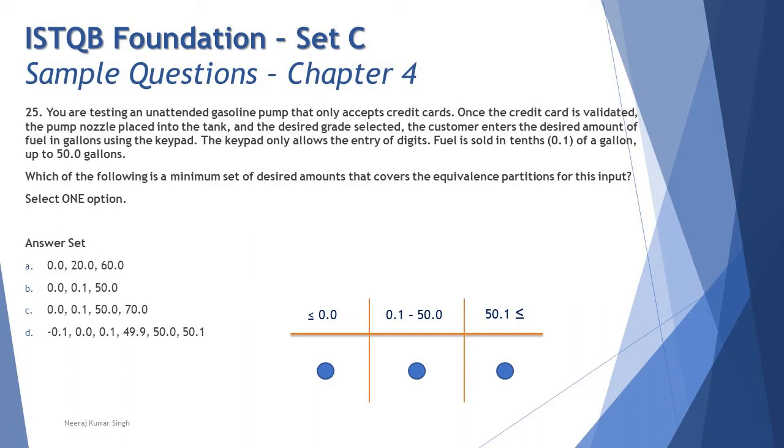The table shows: the very first range is less than or equal to 0.0, meaning anything 0.0 or negative is not accepted. 0.1 to 50 is a valid range where values are accepted. On the third range, 50.1 or greater is non-accepted again.